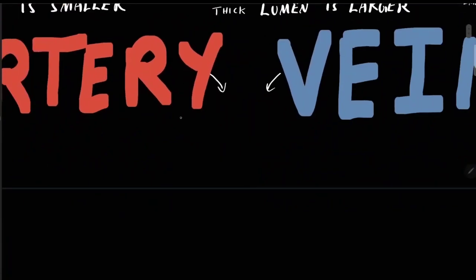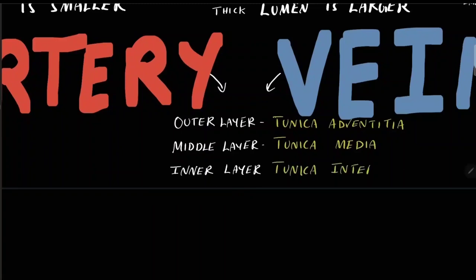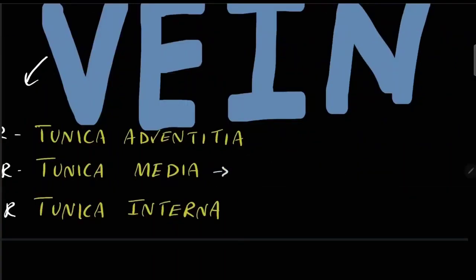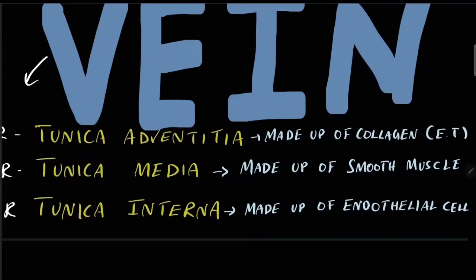Both arteries and veins are made up of three layers. The outer layer is tunica adventitia, the middle layer is tunica media, and the innermost layer is tunica interna. Tunica media is made up of smooth muscles, tunica interna is made up of endothelial cells, and tunica adventitia is made up of collagen which contains elastic tissue.